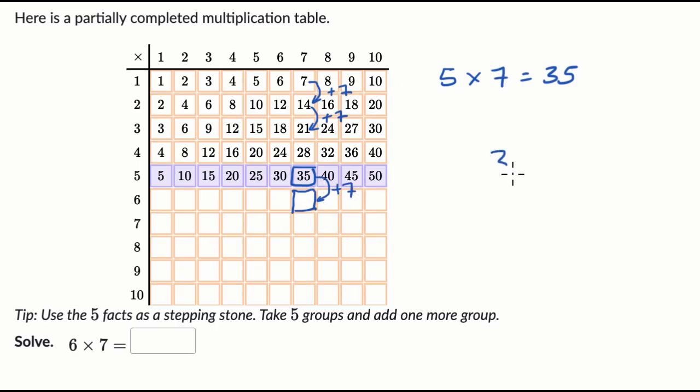So 35 plus 7, we could do that in our head, or we could just write it out over here. 5 plus 7 is 12, and then 10 plus 30 is 40. We get 42. So 6×7 is equal to 42.